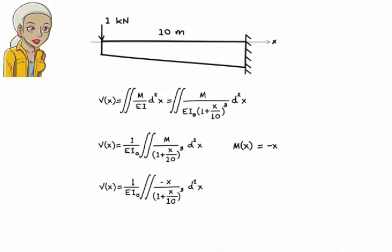If we integrate the function twice, we get v(x) equals 1 over EI₀ times 5000 over 10 plus x plus 1000 times natural log of x plus 10 plus c₁x plus c₂.